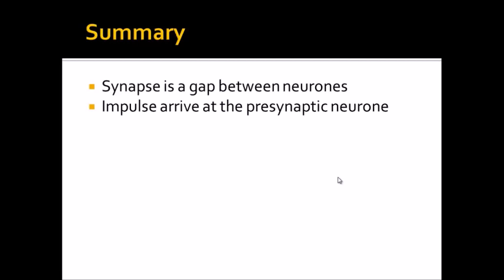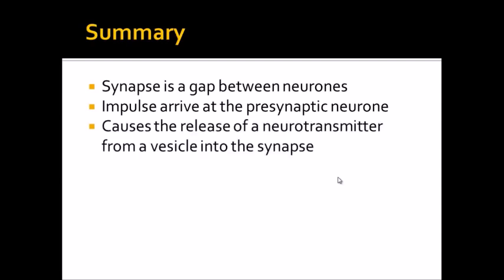Remember, the pre-synaptic is the one before the synapse. What then happens is the neurotransmitter, which is a chemical which is released from a vesicle into the synapse.